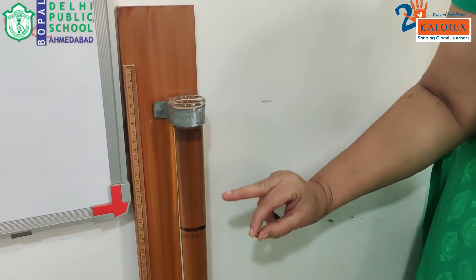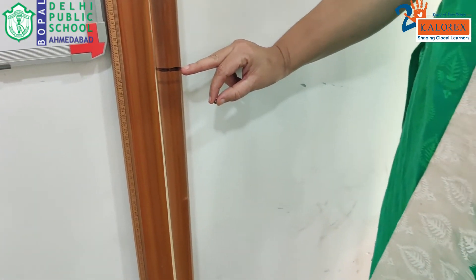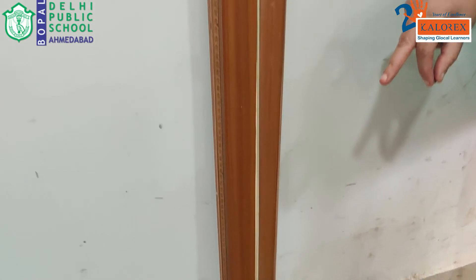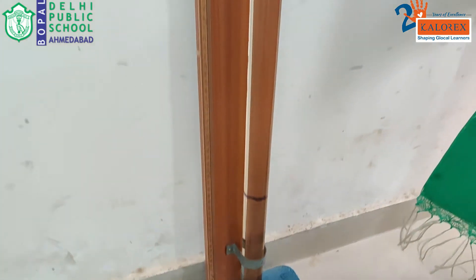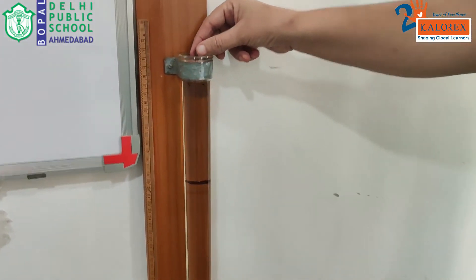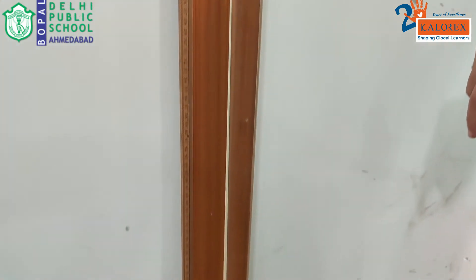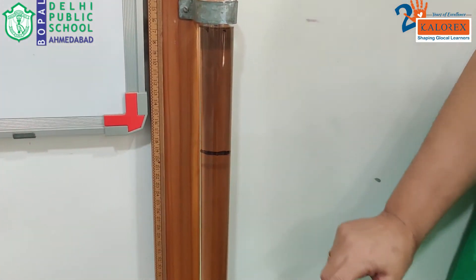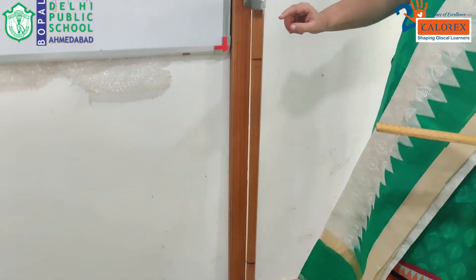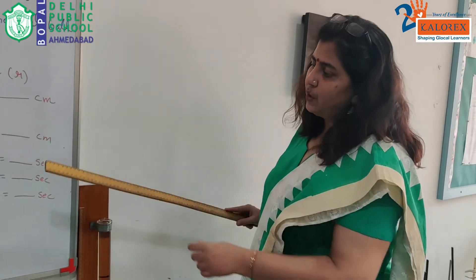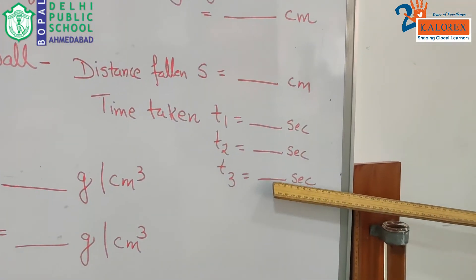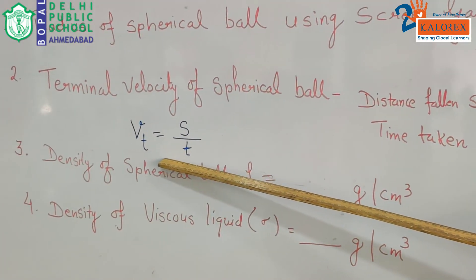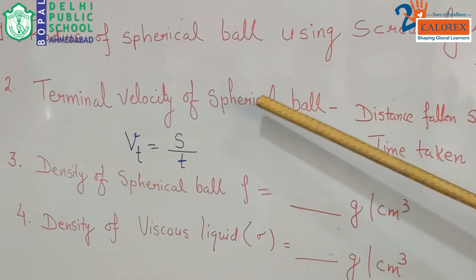As soon as the bob crosses the first line we will start our stopwatch. I am making the bobs fall through the liquid and I will calculate the corresponding time of fall from the top mark to the bottom mark. I will repeat this three times and get three values of the time of fall for one given sphere. Taking the average of this time, I can calculate the terminal velocity of the solid of a particular radius r.